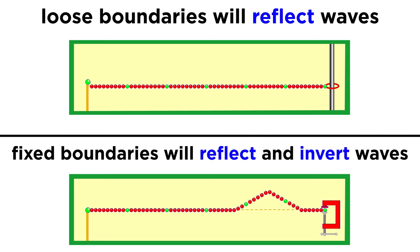If instead this boundary is fixed, waves will be both reflected and inverted, bouncing back in the opposite direction, but now with amplitude of the opposite sign.